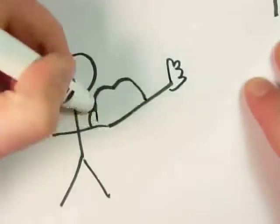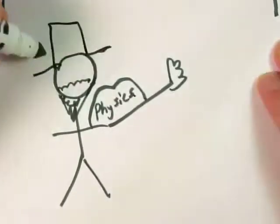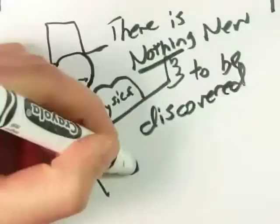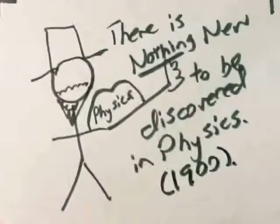An interesting thing happened around the turn of the century in physics. Everybody got really cocky and decided they pretty much knew everything there was to know about physics. A pretty crazy statement considering everything we've learned since then.